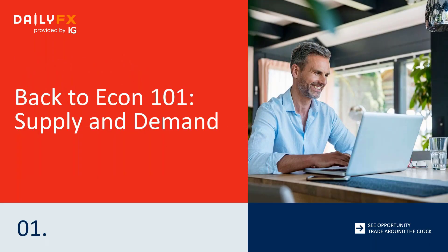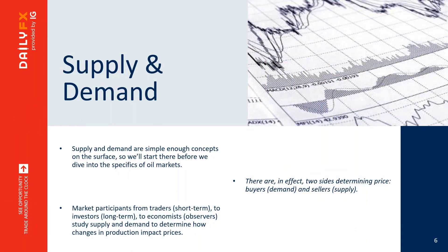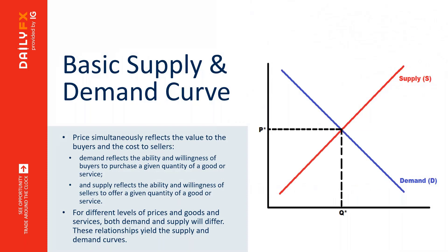Back to Econ 101: supply and demand. When you open up your intro to economics textbook, one of the first discussions you'll encounter is about supply and demand and elasticity. Supply and demand are simple enough concepts on the surface, so we'll start there before we dive into the specifics of gold and oil. Market participants are short-term or long-term — traders or investors — but they can also be outside observers like economists who study supply and demand to determine how changes in production impact prices. In effect, there are two sides determining price: demand and supply break down into buyers and sellers. We want to distill these terms into something we can understand and utilize as we interpret information.